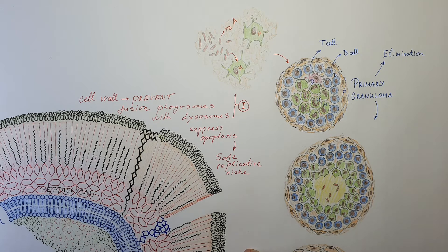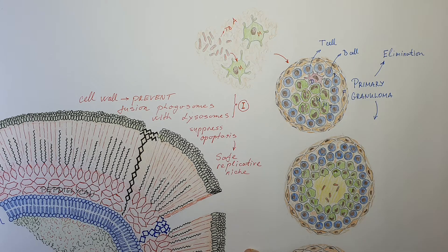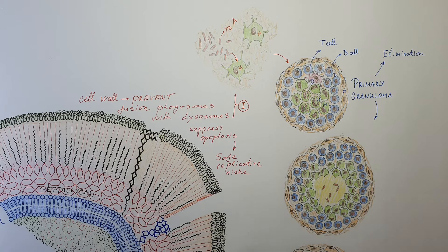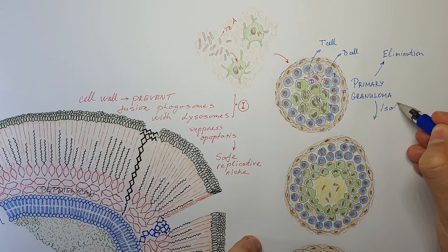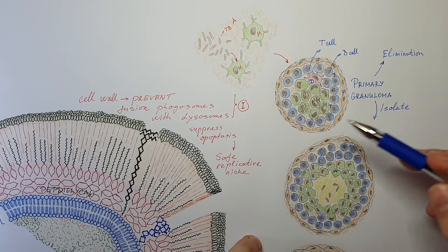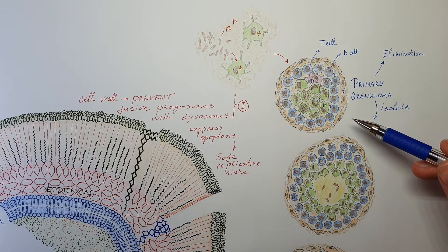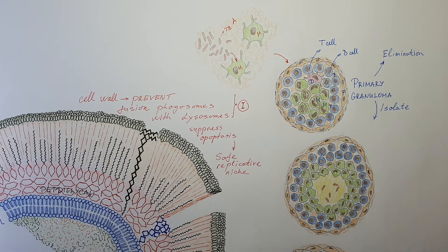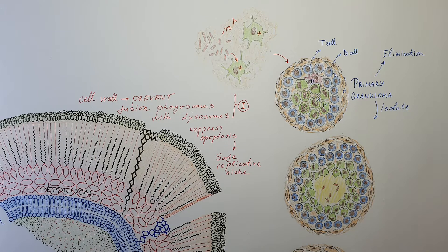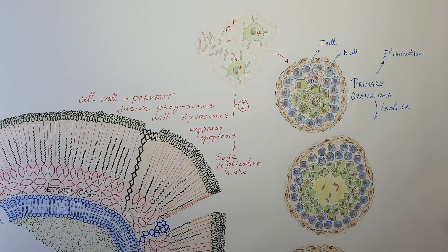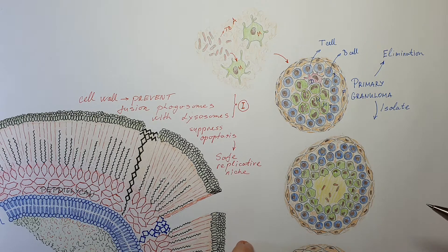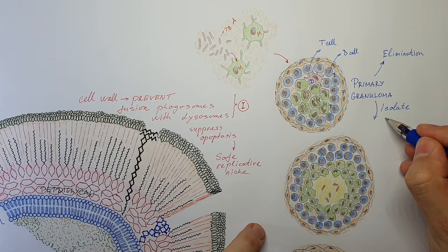But there is a possibility for this to stay like this. If our body cannot eliminate, our immune system, if it is unable to eliminate, the only possibility is to isolate it. Like in this granuloma. If it stays isolated like this, obviously, sometimes when our body weakens and when the immune system weakens, the possibility to contain this infection like this goes down and there is a possibility for reactivation. So this is basically a latent infection.